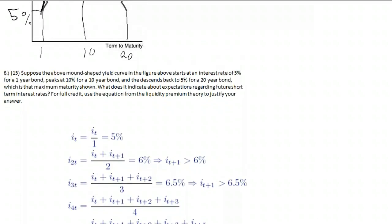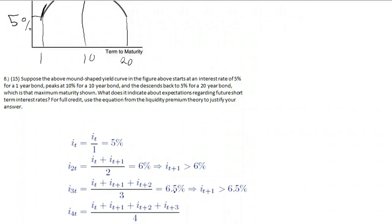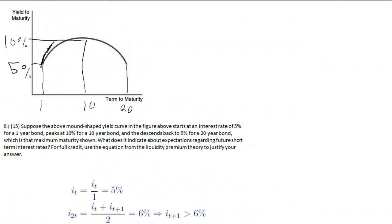Let's look at the 3-year bond to clarify this further. From the expectations theory, the interest rate on the 3-year bond equals the average of the current short-term 1-year rate, next year's 1-year rate, and the 1-year rate from the year after. Since the average of the first two terms equals the 2-year rate — say 6% — the average of all three, say 6.5%, must be pulled upward by the third term. That third term must be higher than 6.5%, which again means the short-term rates are higher than the yield curve.